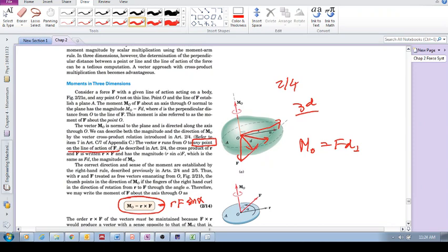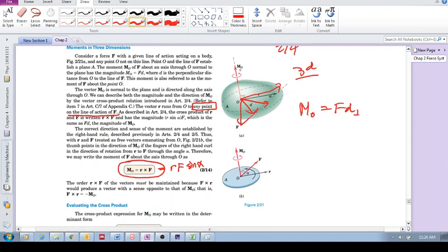That's why using vector product, using vectors and the cross product, is sometimes a lot easier. Now what about the direction? We need to use the cross product, but what about the direction?